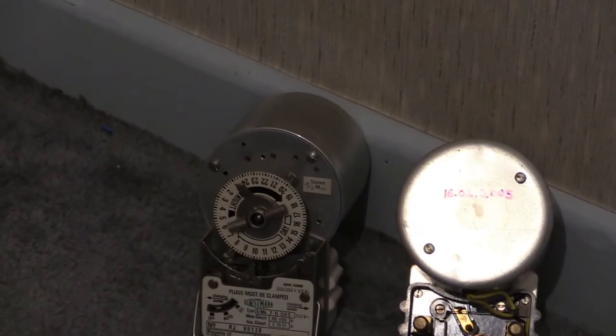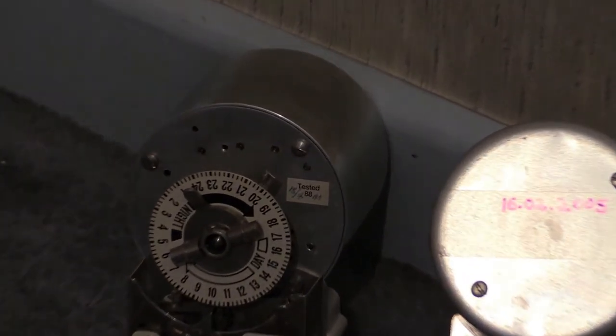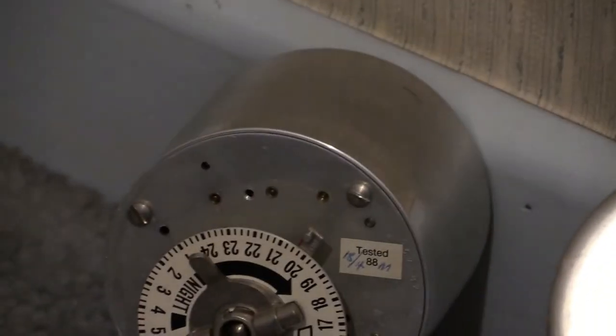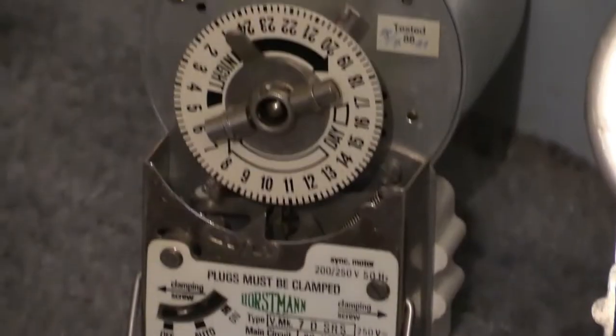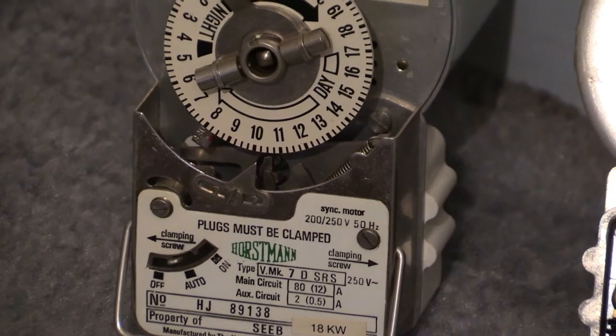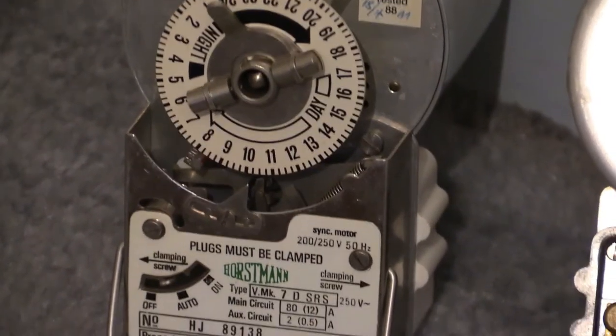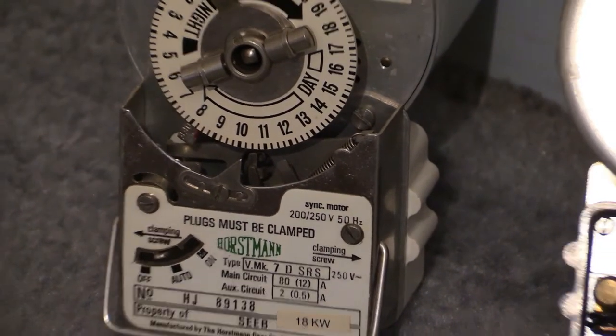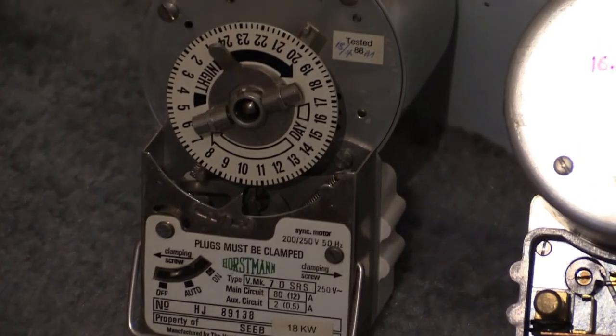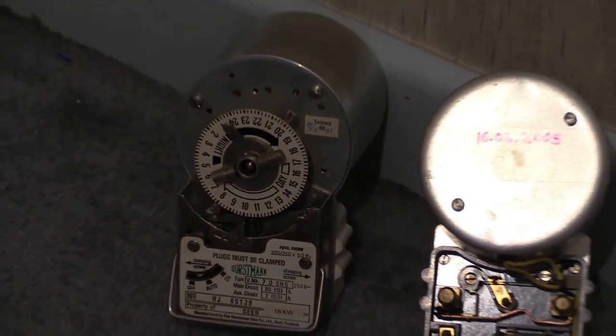So that's the pin base on a Horstman VMK 7 SRS. You can see that the back can on that is quite a depth. Again, the pin base on that one with the white specification plate will be exactly the same. Let's now place them back into the cases.